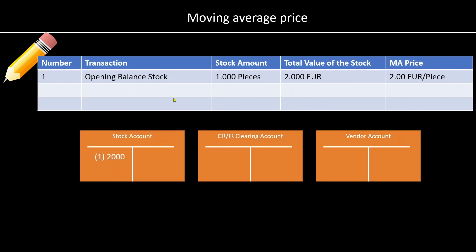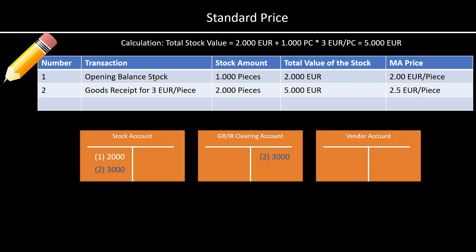Let's now look at the moving average price. We will take the same scenario: we have an opening balance of 1,000 pieces valuated at a moving average price of 2 euro per piece, which is 1,000 times 2 equals 2,000, recorded as a debit in the stock account. Now we receive our goods again for 3 euro per piece. Our total stock value — starting with 2,000 from the initial balance, plus 1,000 pieces at 3 euro per piece — makes a total stock value of 5,000 euro. The stock account increases by 3,000, giving a total value of 5,000, and the GRIR clearing account is credited with 3,000 as well.